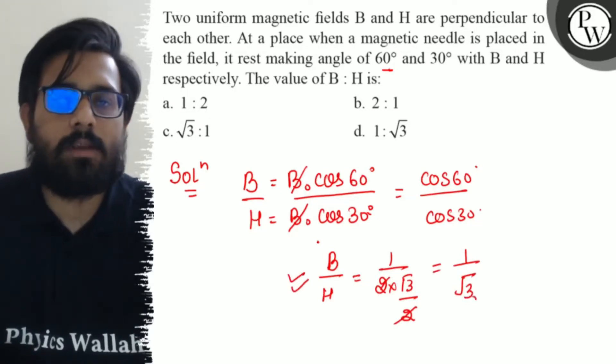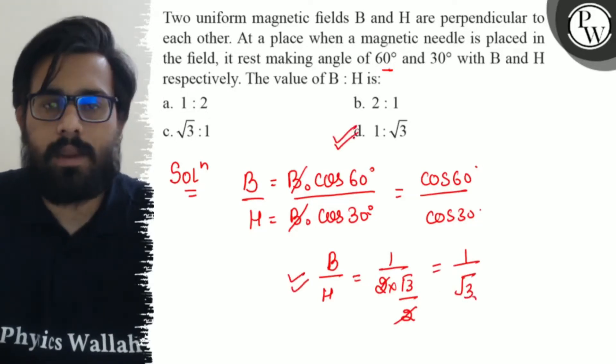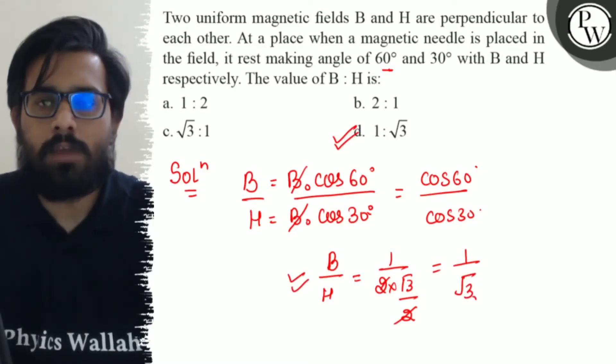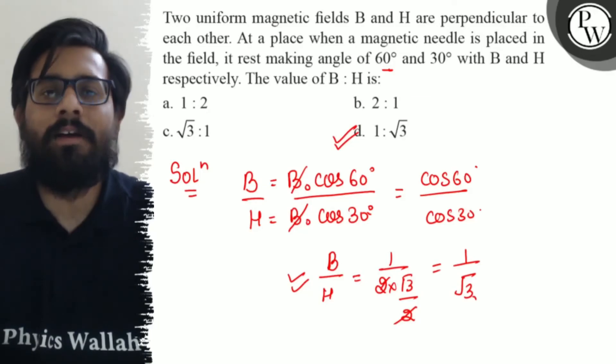The ratio of B and H comes to be 1:√3, jo ki apko mil raha D option hai. And hence, your option D is absolutely correct. So I hope you got the concept of this question very well.